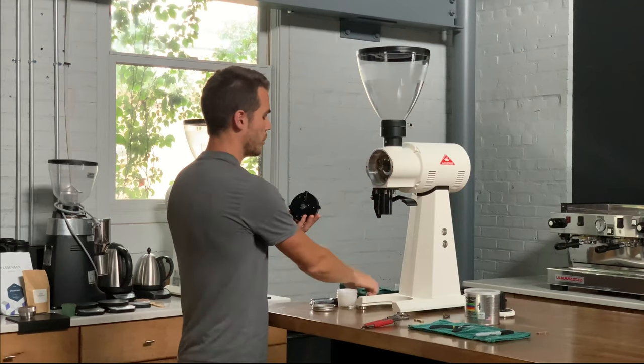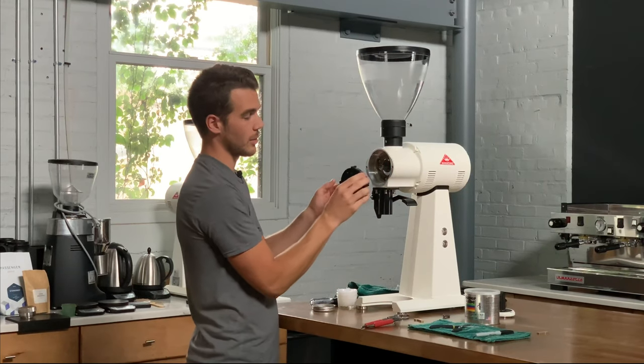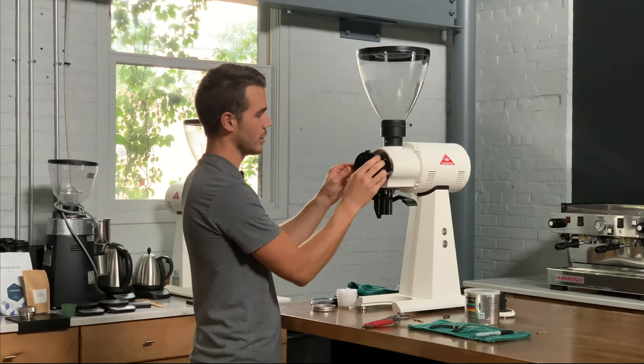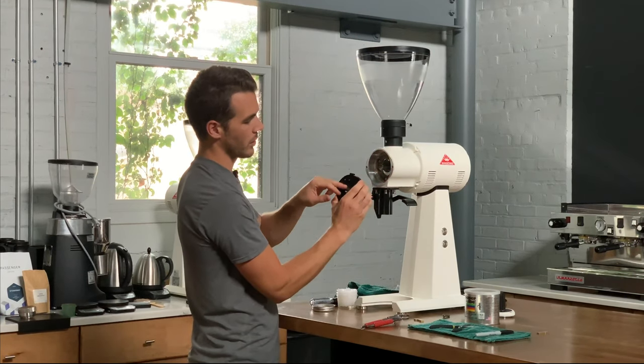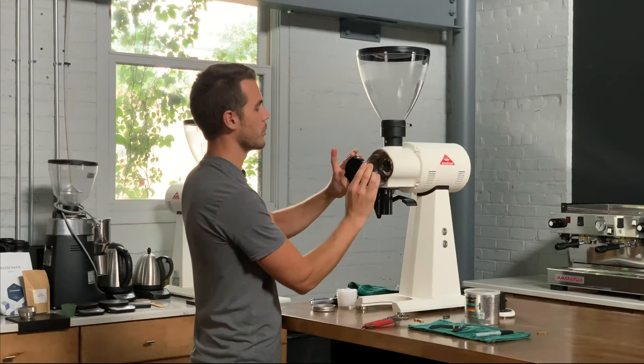Then we're going to replace the burr carrier in the same way that we marked it out in the beginning. So my Sharpie is on the top side of my shaft here and my mark is on the top side of my burr carrier. So just put it in like that.